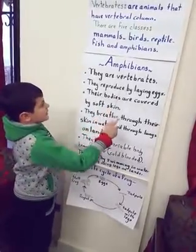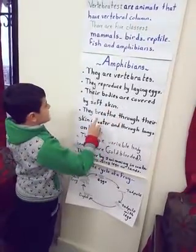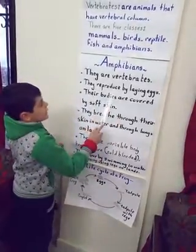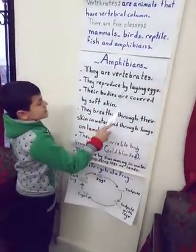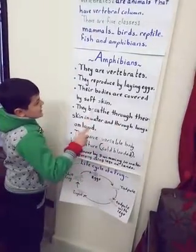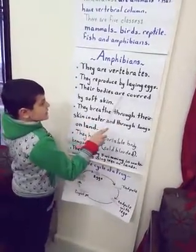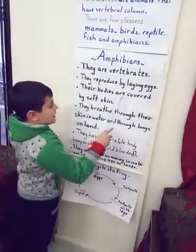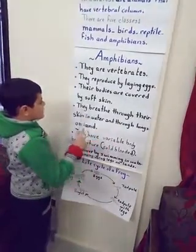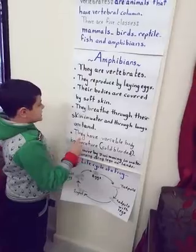Amphibians are vertebrates. They reproduce by laying eggs. Their bodies are covered by soft skin.